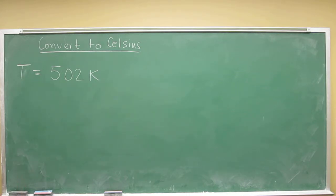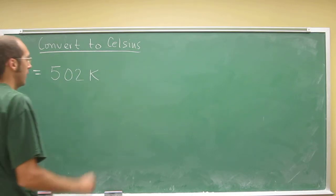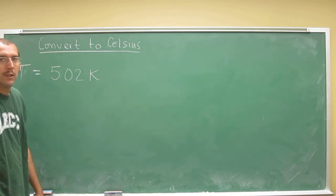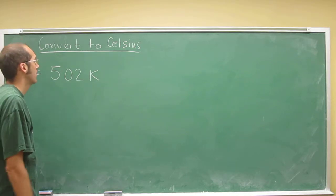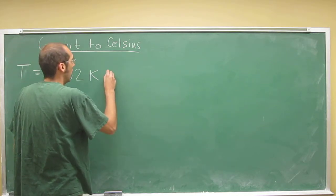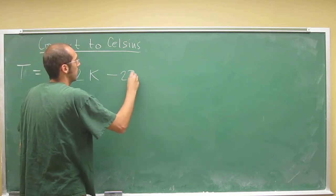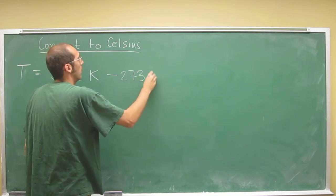So remember the conversion? It was adding 273.15 when you had Celsius, so it's going to be subtracting 273.15 because that's the difference between the freezing point of water and absolute zero, right? So minus 273.15.